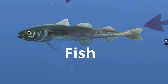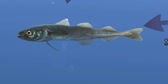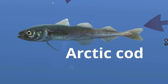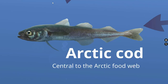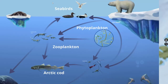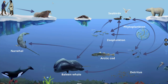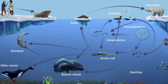Hundreds of different fish live in the Arctic Ocean, including sculpin, eel pouts, and salmon. However, the Arctic cod is one of the most numerous Arctic fish and is considered central to the Arctic food web. It provides a rich meal for seabirds, whales, and seals, which in turn provides a meal for polar bears and walrus, which roam the Arctic ice.